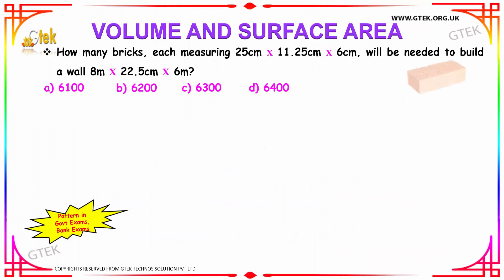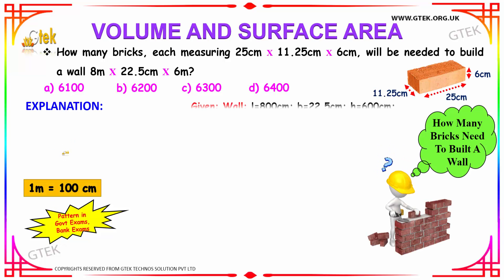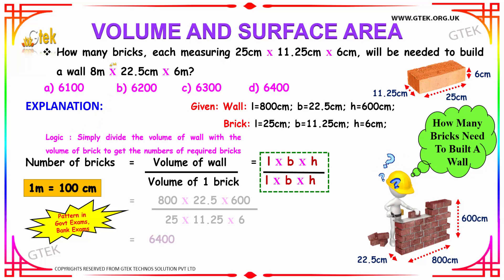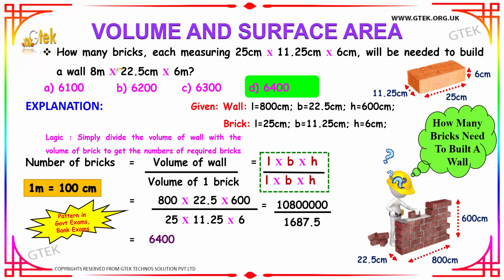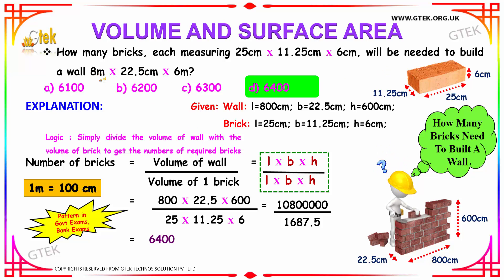We have another interesting example — important as well, having appeared in government and bank exams. We have to calculate the number of bricks that can be used to build a wall. The brick has dimensions 25 cm, 11.25 cm and 6 cm as its length, breadth and height. The wall has dimensions: length 800 cm, breadth 22.5 cm and height 600 cm, after converting the meter values into centimeters.